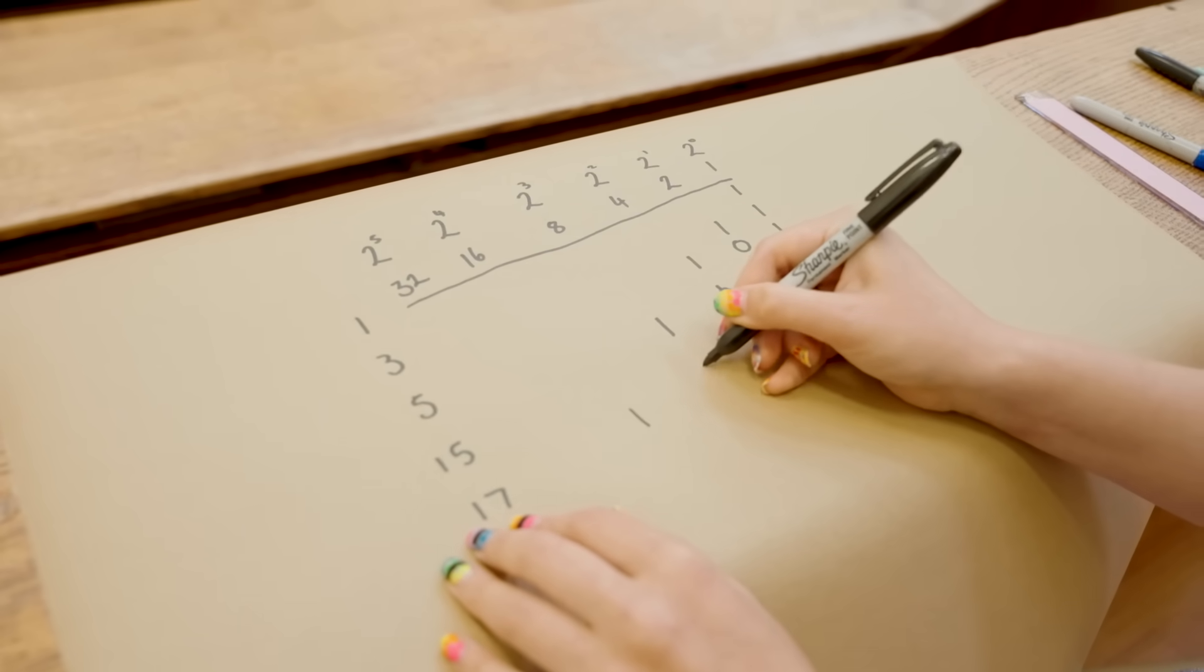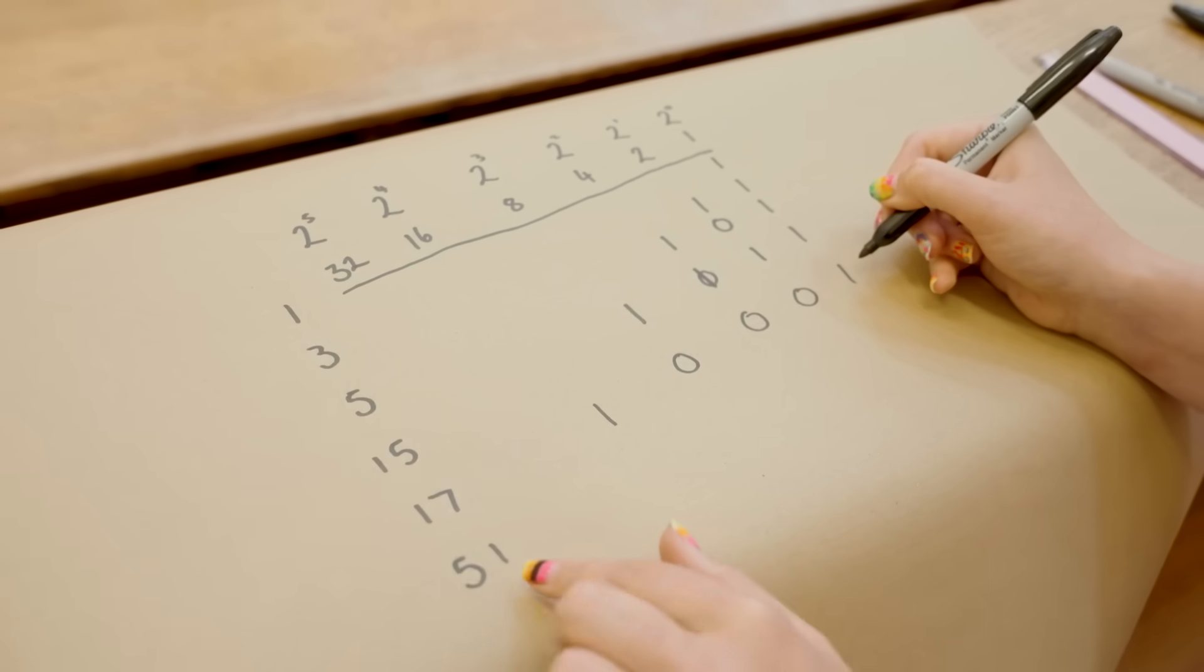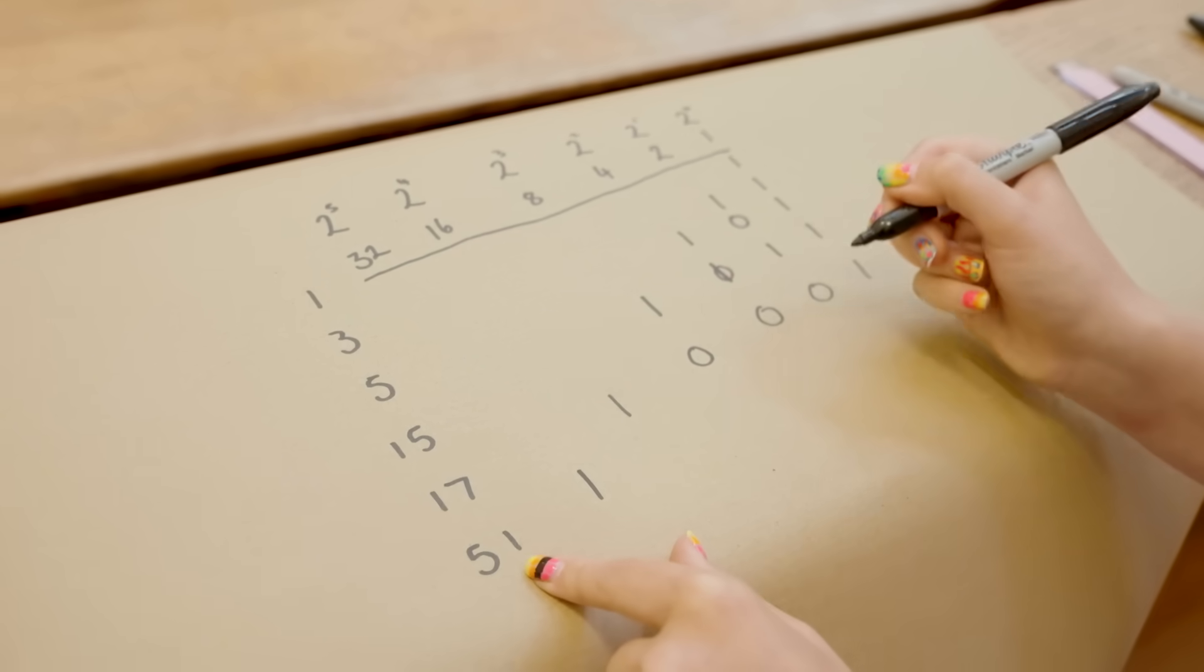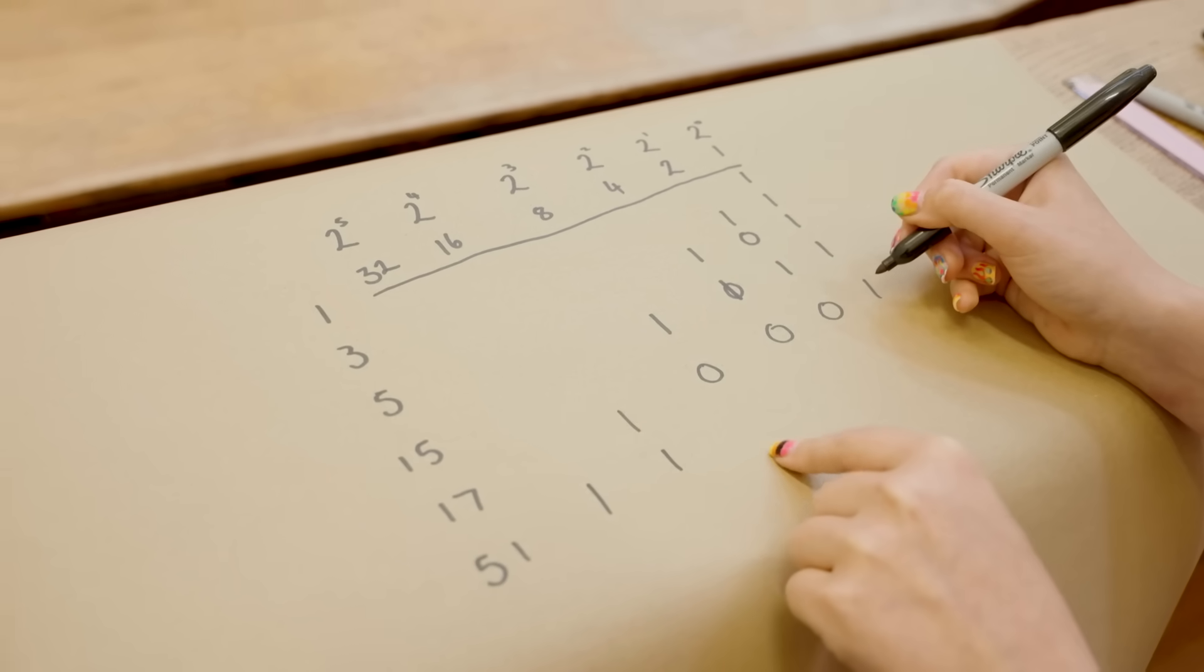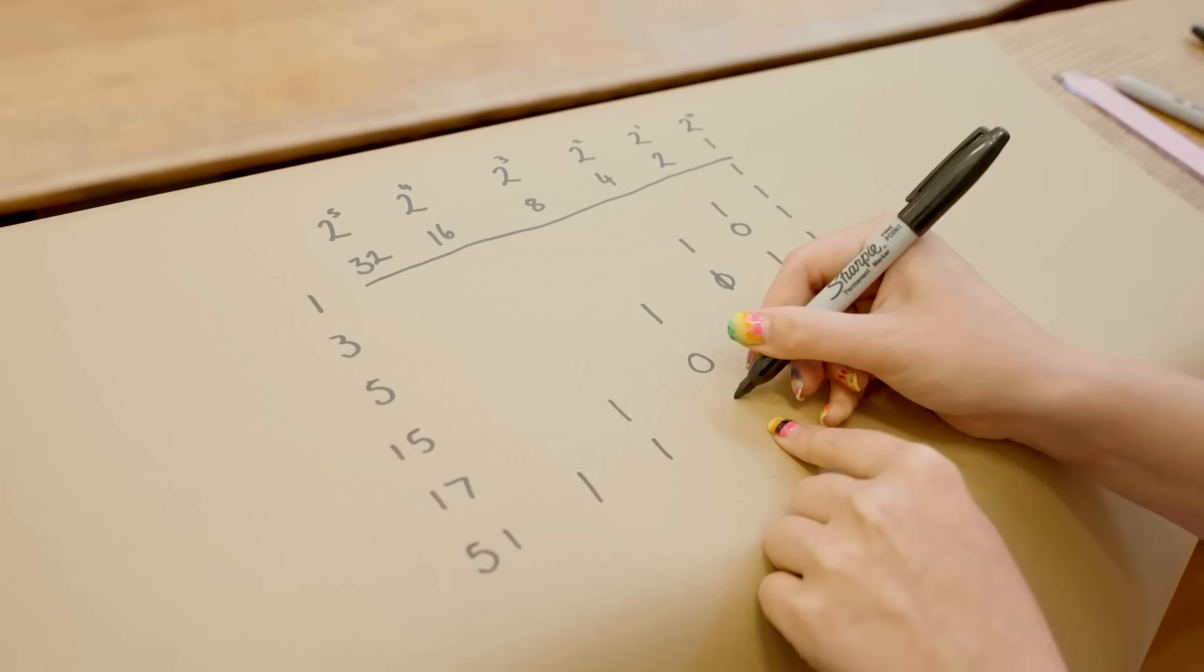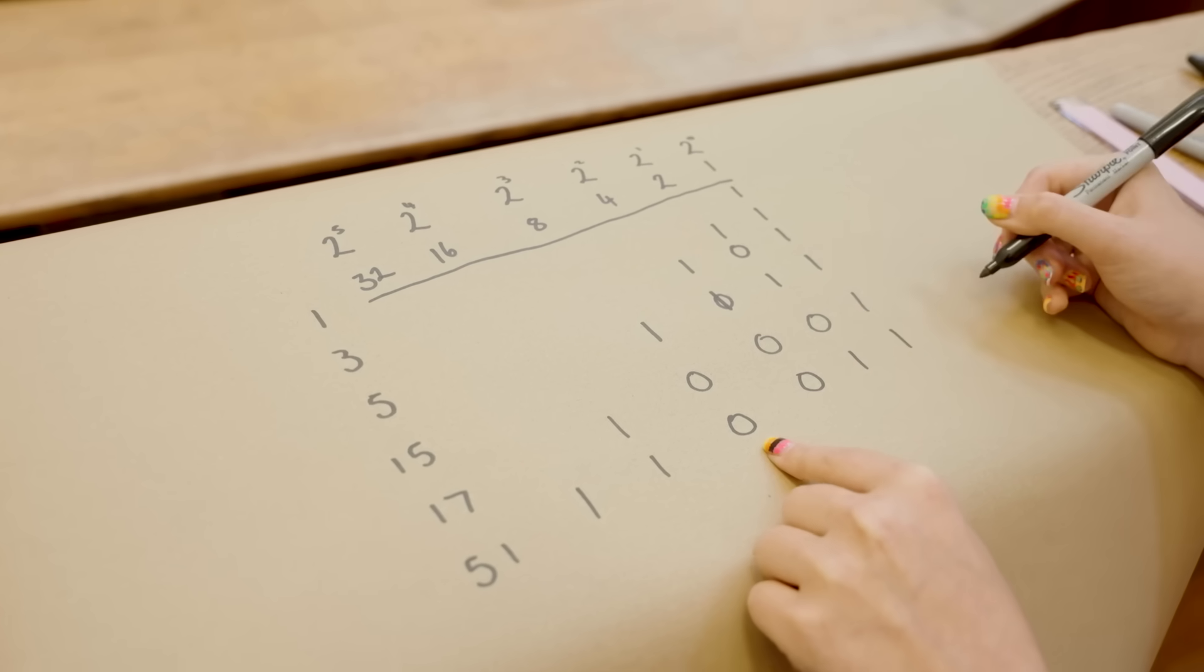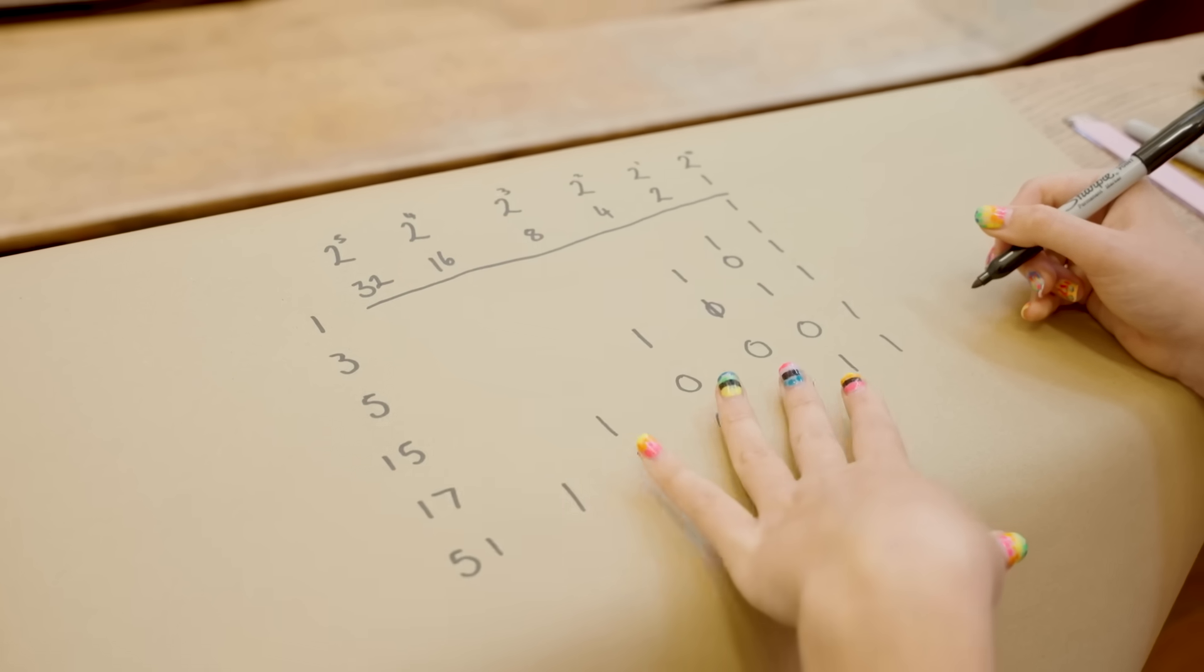Seventeen. We need one sixteen. Don't need any of these. We need a one. Fifty-one. Okay. We're going to need a thirty-two. We're going to need a sixteen. So that's a forty-eight. And yeah. Don't need these. Fifty. Fifty-one. Cool. Okay. So we've got odd constructible numbers converted into binary.